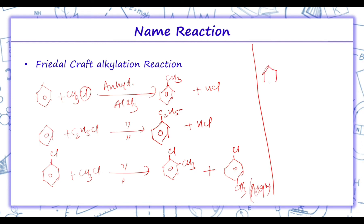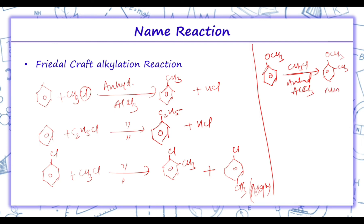Similarly, if we have methoxybenzene and it reacts with CH3Cl in presence of anhydrous AlCl3, the OCH3 group is ortho-para directing. So we get 2-methoxytoluene as the minor product and 4-methoxytoluene as the major product.